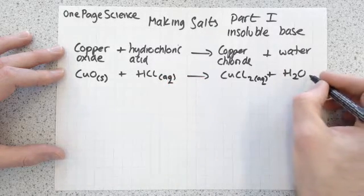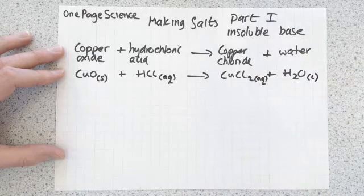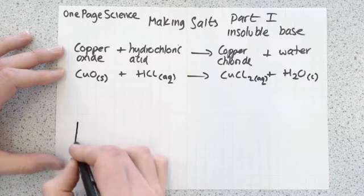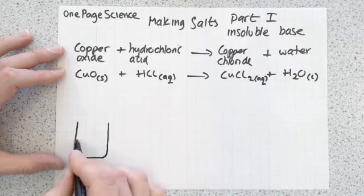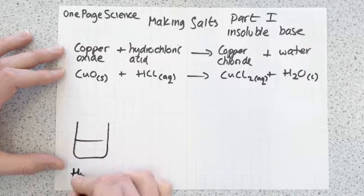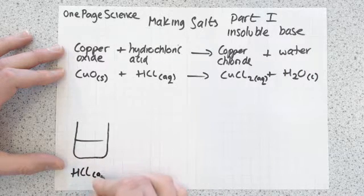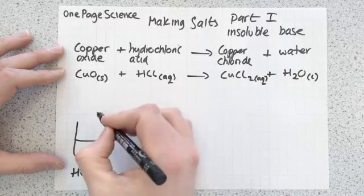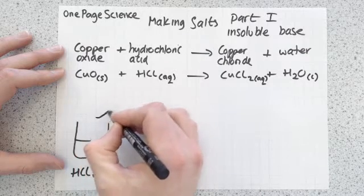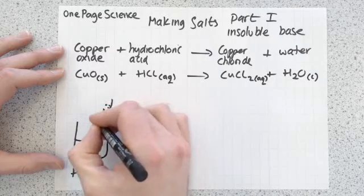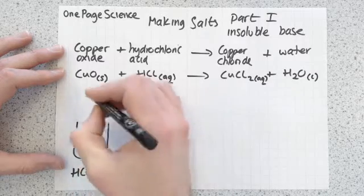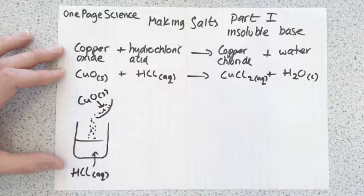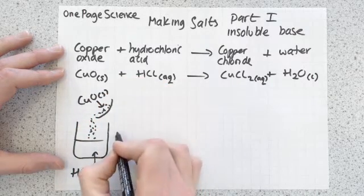So first thing you're going to do is have a beaker, and inside that beaker we've got a solution of hydrochloric acid. And then we're going to tip into that our copper oxide, which is a solid, and get a good stir.